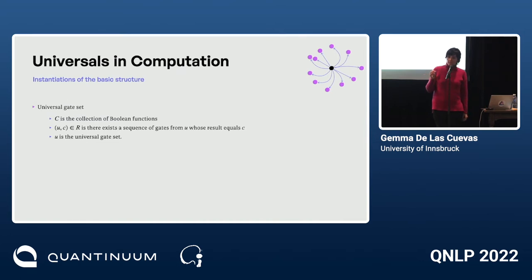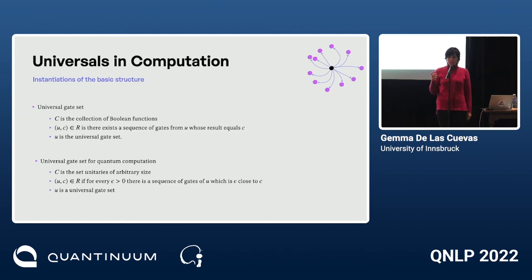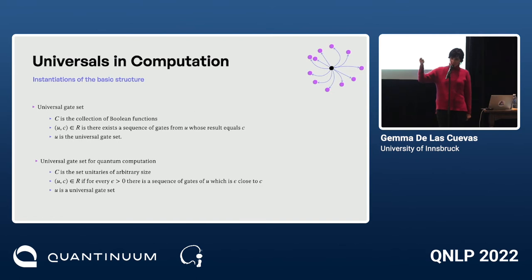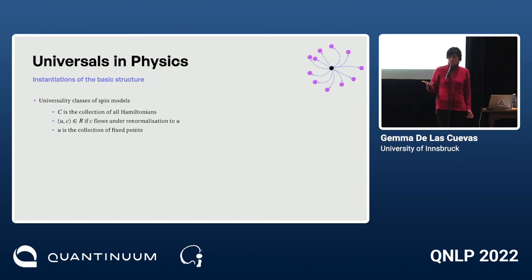A universal gate set is a little different: C is the collection of Boolean functions, and the relation expresses that for any Boolean function there exists a sequence of gates from the gate set so the two coincide. For quantum computation, C is the collection of unitaries of any size, and R expresses that for any epsilon there is a sequence of gates epsilon-close to the target unitary. There are nuances — sometimes an existential quantifier, sometimes not — but they all fit this basic structure.